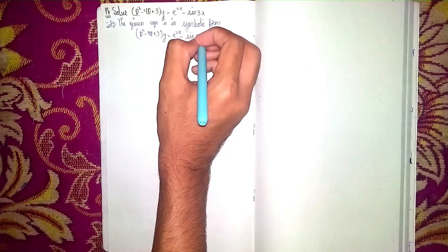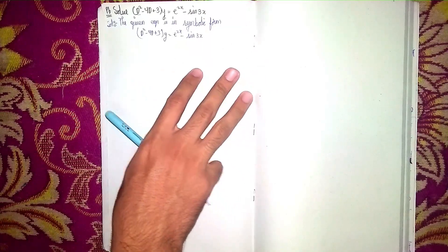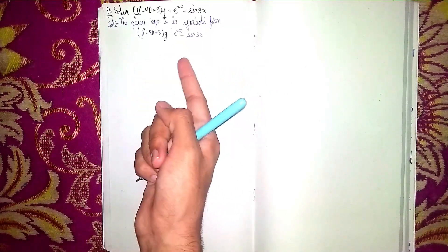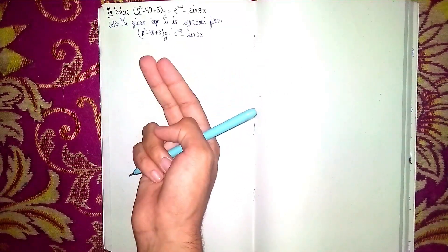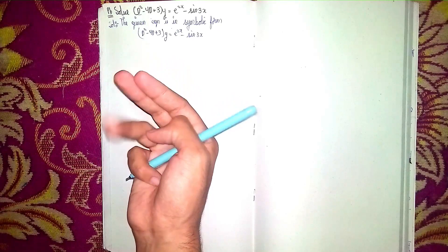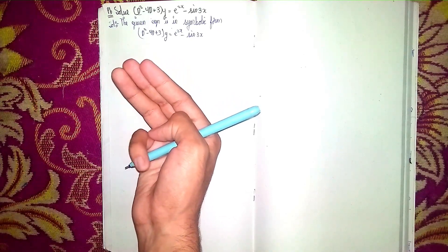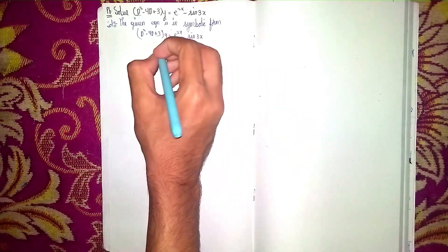In this question, we have three steps to solve. The first step is to find the complementary function. The second step is to find the particular solution. The third step is to find the general solution.